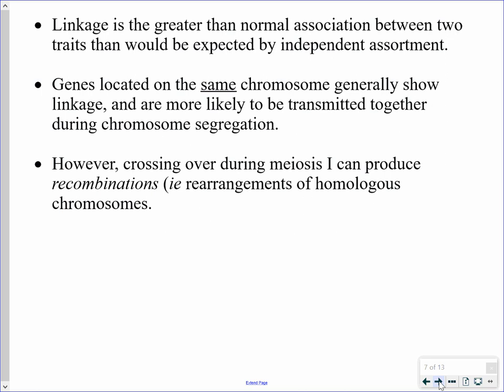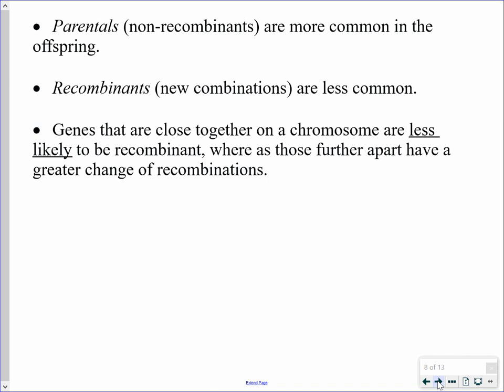Gene linkage refers to genes physically attached on the same chromosome. There is a greater likelihood than expected by probability that linked genes will be transmitted together into the same gamete. Crossing over takes place during prophase I of meiosis, producing recombinants — chromosomes that don't look like the original parental ones. The parental chromosomes look like the originals; the recombinants result from crossing over, and those are what we really care about for chromosome mapping.